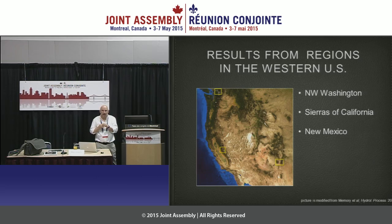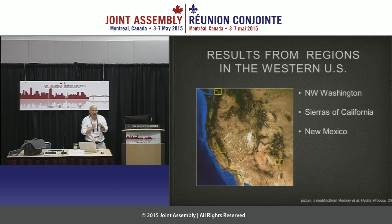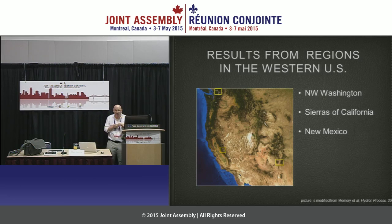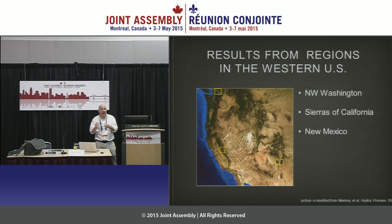I'll start with my results and then move to the methods. I'm going to show you three sites: one in northwest Washington where there's perennial snow cover, one along the spine of the Sierras where you get a large amount of snow, and one in north central New Mexico just north of Santa Fe. Each of these sites is between 10,000 and 15,000 square kilometers.